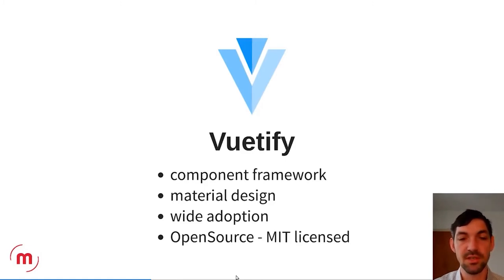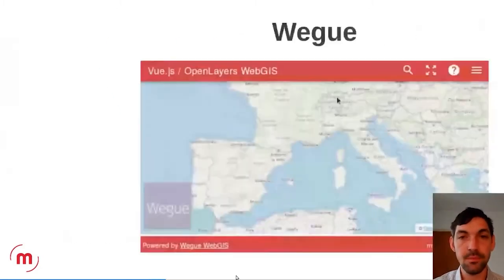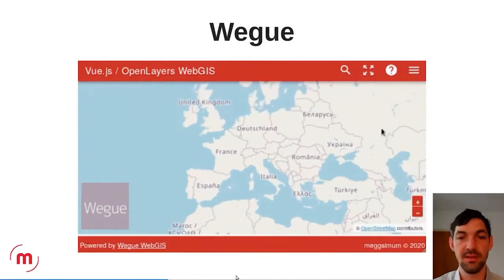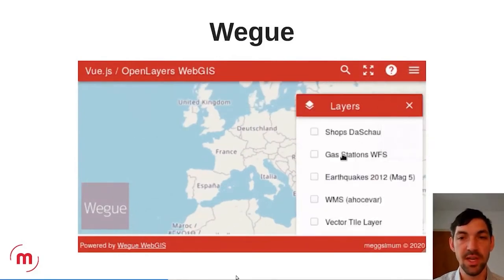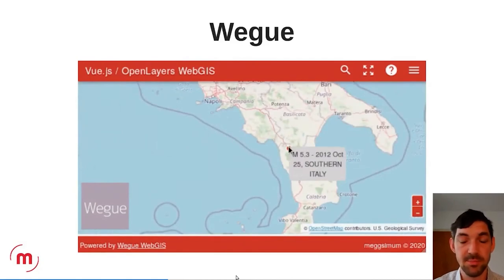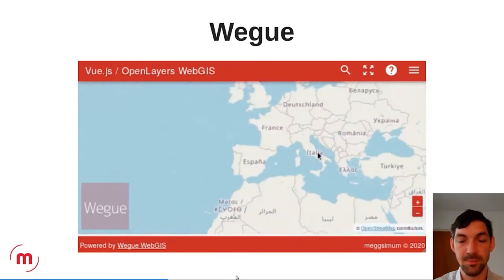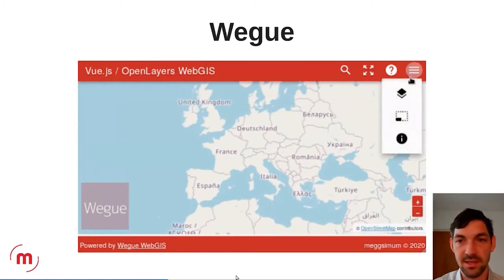Vuetify is built upon Material Design, is open source like Vue.js, and provides UI elements out of the box — buttons, checklists, windows, tables, and lists — giving a really consistent and nice design. Here's an animation of how WECU can look: you have a layer tree, a map, and you can switch layers on and off. Basically all the standard things you expect from a web map, and you can activate all these functionalities out of the box with the configuration file.